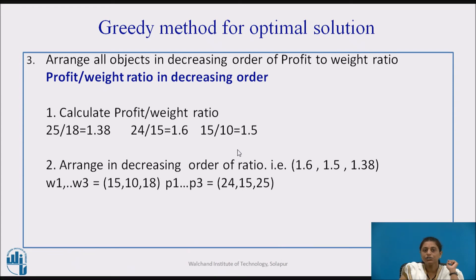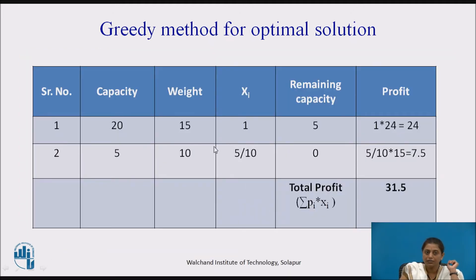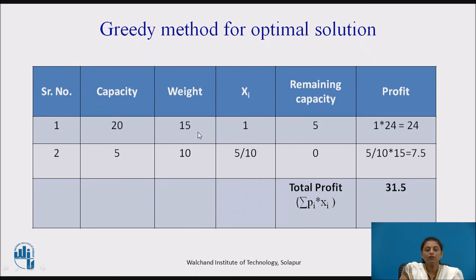The third step is to put the objects into the knapsack one by one until it is filled. After arranging in decreasing order of profit-to-weight ratio, the first object has weight 15 and capacity is 20. Since 15 is less than 20, we take it completely — fraction is 1 — and profit earned is 1 into 24, which is 24. Remaining capacity is 20 minus 15, which is 5.